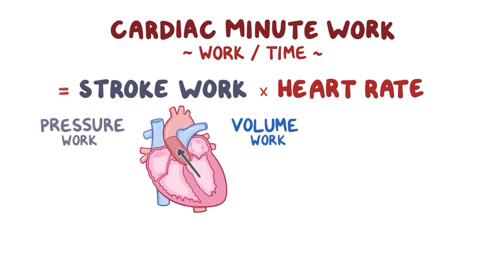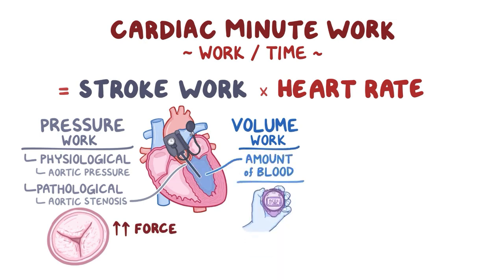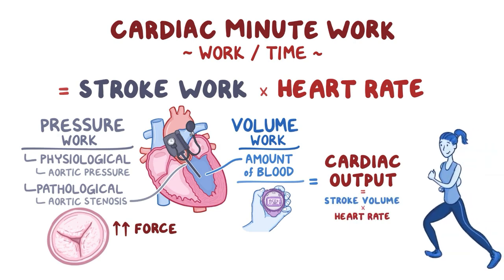Cardiac minute work has two separate components: pressure work and volume work. Pressure work is the amount of work the left ventricle must produce in order to push the blood past any downstream resistance, which can be physiological, like aortic pressure, or pathological in conditions like aortic stenosis, when the aortic valve has a narrower opening, so the left ventricle must exert a much greater force to push blood into the aorta. Volume work is the amount of blood that the left ventricle moves per time, equivalent to cardiac output, defined as stroke volume times heart rate. For example, in strenuous exercise, the heart rate increases and therefore increases the cardiac output or volume work.